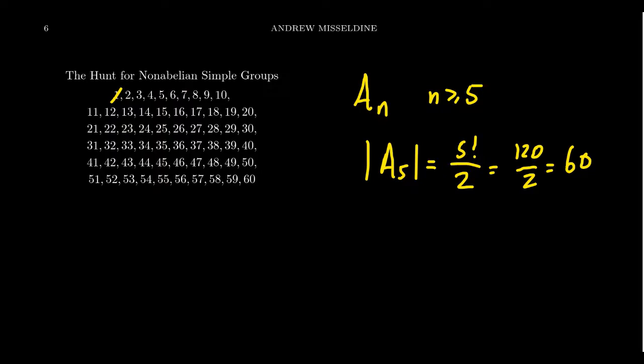So we lose 2, 3, 5, 7, 11, 13, 17, 19, 23, 29, 31, 37, 41, 43, 47, 53, and 59. So I think we've ruled out all of the prime numbers because there's no non-abelian groups of order prime. They're necessarily abelian.